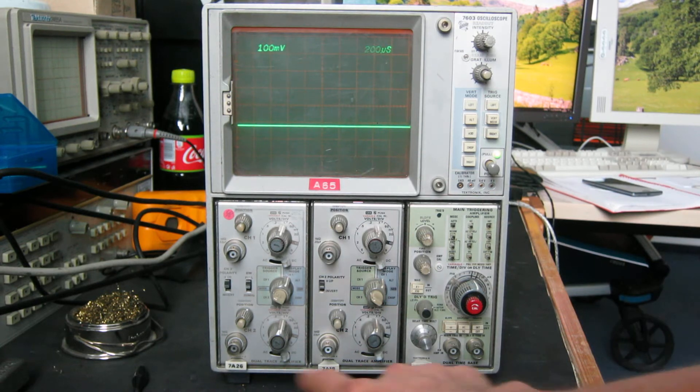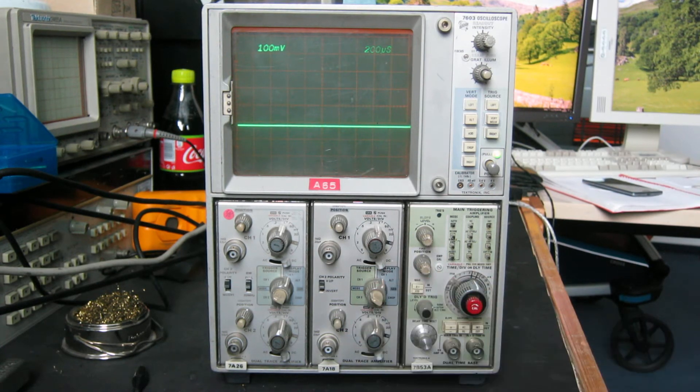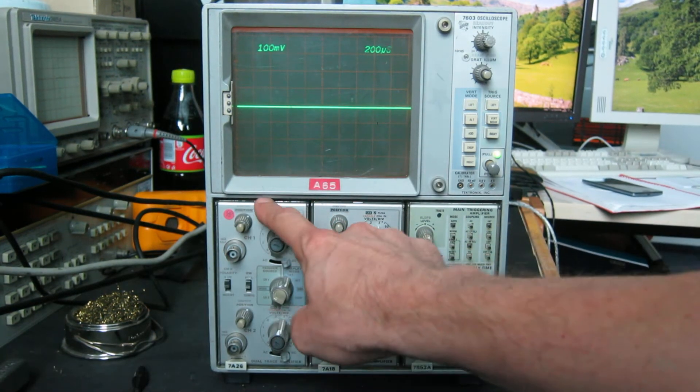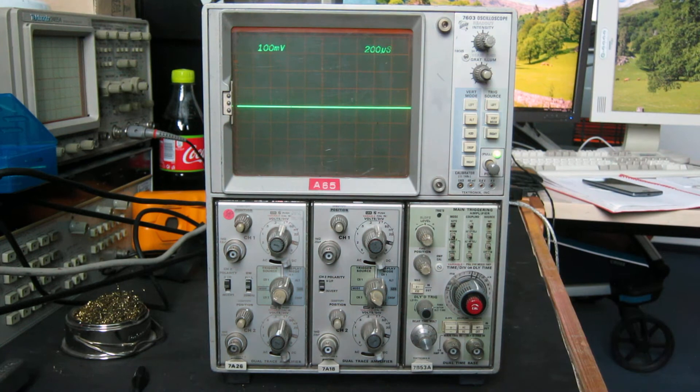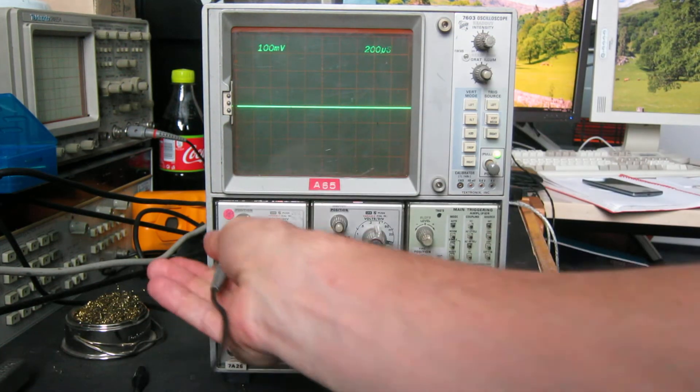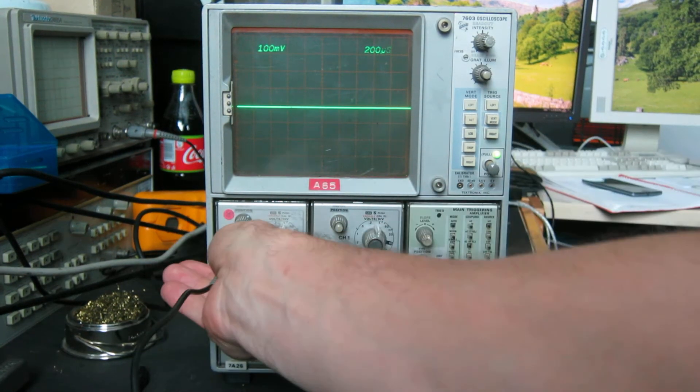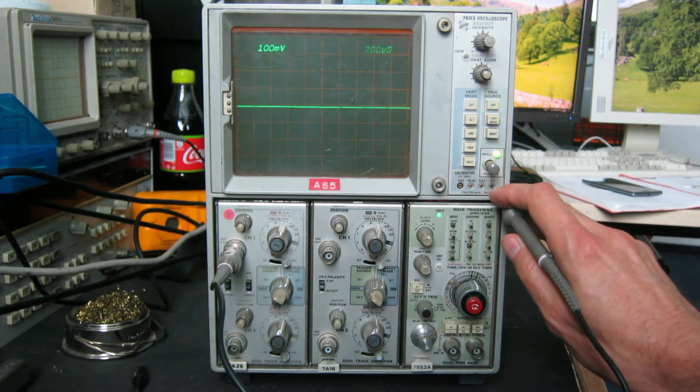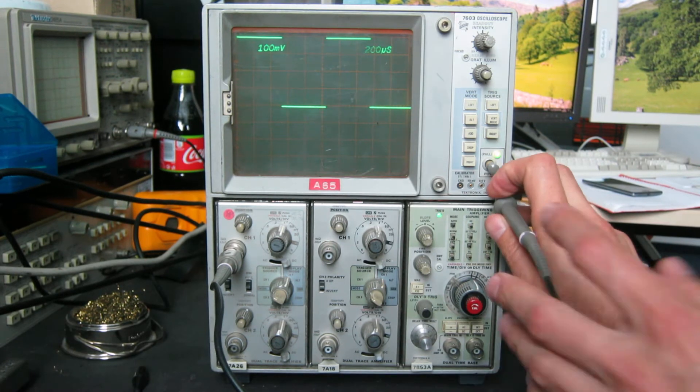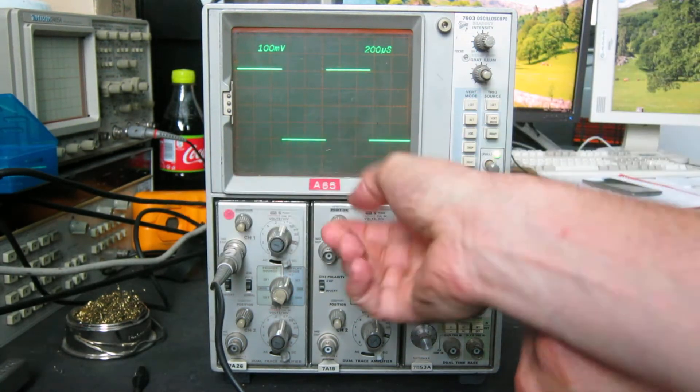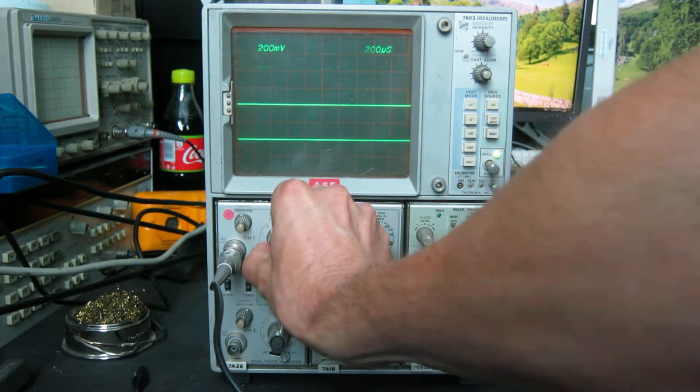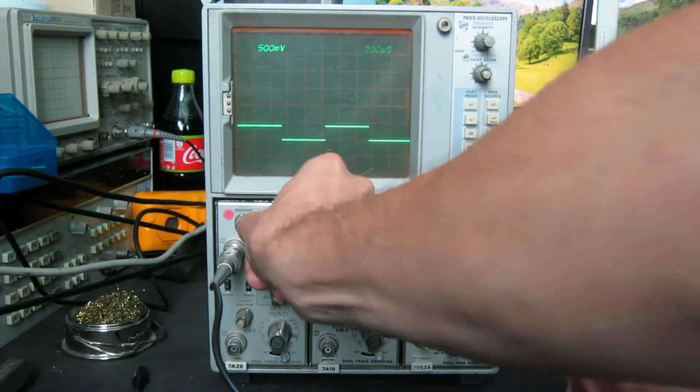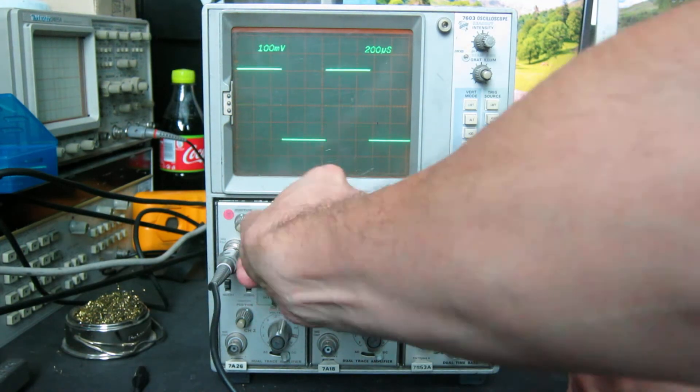So this scope, because it's got two dual-trace plug-ins, has four traces. We've got the first one enabled at the moment, trace one in the left-hand slot, and we'll use this probe just to demonstrate that it works. If I plug that in there and pop the probe into the calibrator, we have a healthy signal, and I can move it around, adjust the attenuator, and it changes size. I'll try and adjust the triggering so we can see it more clearly. It's all good.